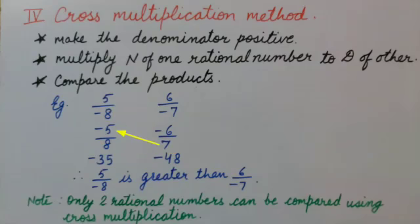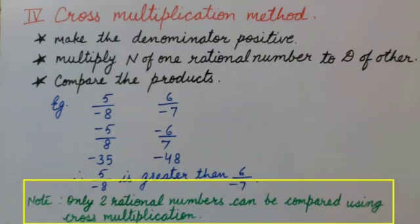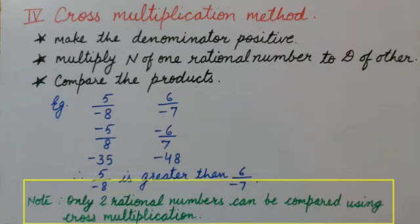So the product of −5 and 7 is −35. Similarly, the product of −6 and 8 is −48. We can see −35 is greater, so 5/−8 is greater than 6/−7. However, only 2 rational numbers can be compared using cross multiplication. If we have to arrange more than 2 rational numbers in ascending or descending order, we cannot use the cross multiplication method.